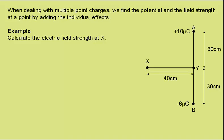Firstly, we need to know the distance of X from A and from B. This is going to be the same distance, and you'll notice we have 30 centimetres and 40 centimetres, so we have a 3-4-5 triangle, meaning the hypotenuse will be 50 centimetres, and I'll label this angle theta.